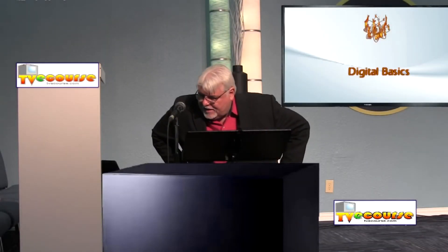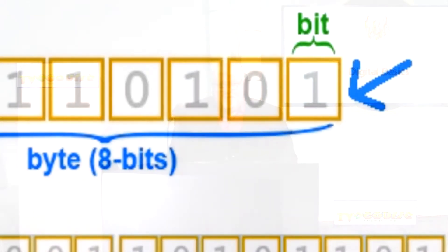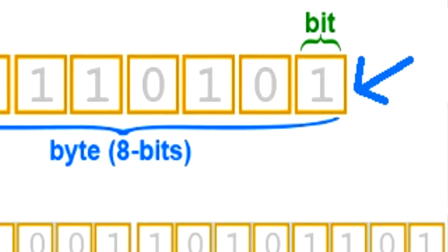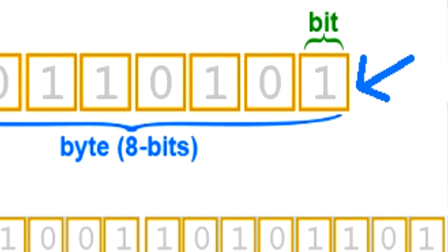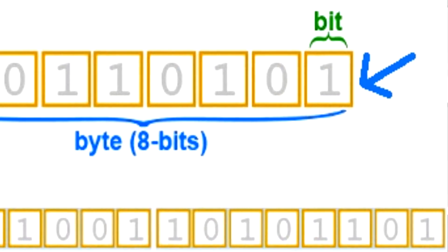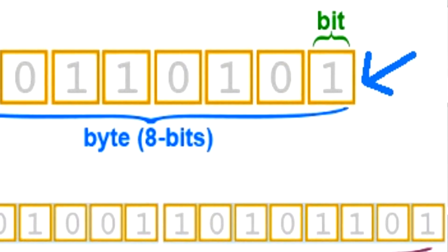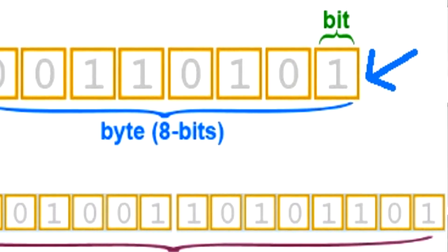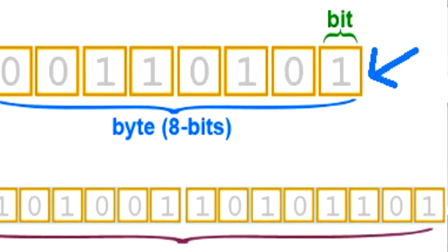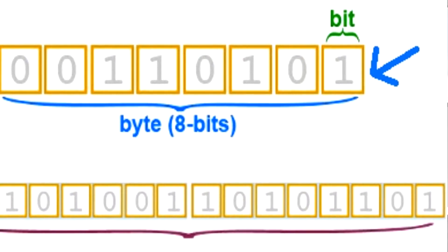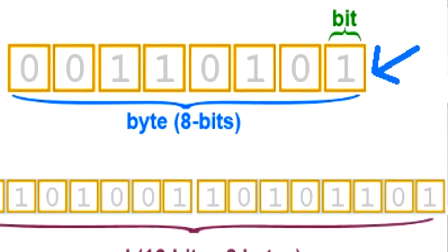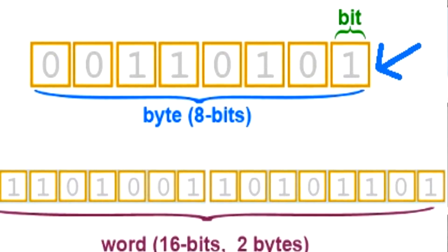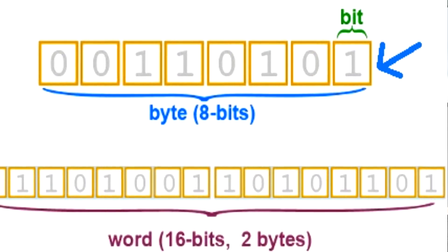Let's talk about some more of our concepts. A bit is a binary digit — it's either a one or a zero. It's the basis of digital broadcast and digital communication. A bit is used as part of digital communication and digital recording, and it is the individual one unit of a digital signal.